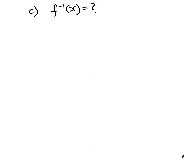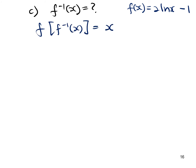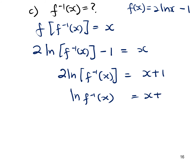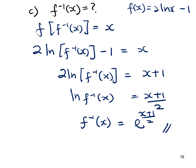Finding f inverse: using the definition f(f⁻¹(x)) = x, substitute f⁻¹ into f: 2 ln(f⁻¹(x)) − 1 = x. Rearranging: ln(f⁻¹(x)) = (x + 1)/2. Converting to index form: f⁻¹(x) = e^((x+1)/2), which is an exponential function.